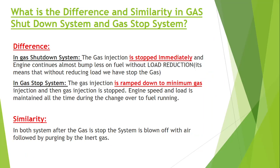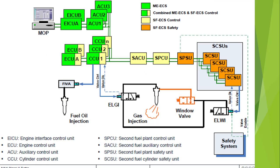The similarity between gas shutdown and gas stop is that in both cases, after the system is stopped, it is first blown off with air followed by purging with inert gas. The difference is that in gas shutdown, there is an immediate stopping of the system, whereas in gas stop, it ramps down to a minimum gas injection before the gas is stopped.